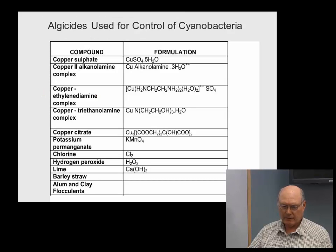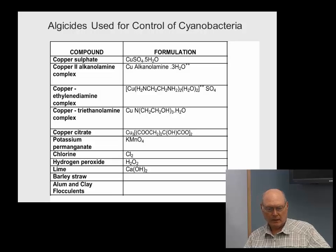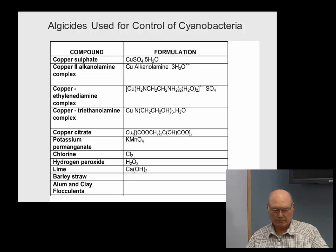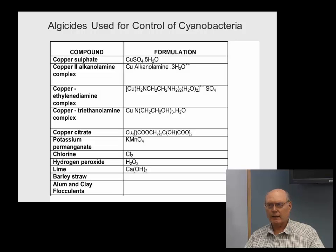Here is a summary list of algaecides used for cyanobacteria control: copper sulfate (the old standby, not used much now, though copper analogs still are), potassium permanganate, various chlorine compounds, hydrogen peroxide, and Pac-27 (sodium carbonate peroxyhydrate — a peroxide compound).